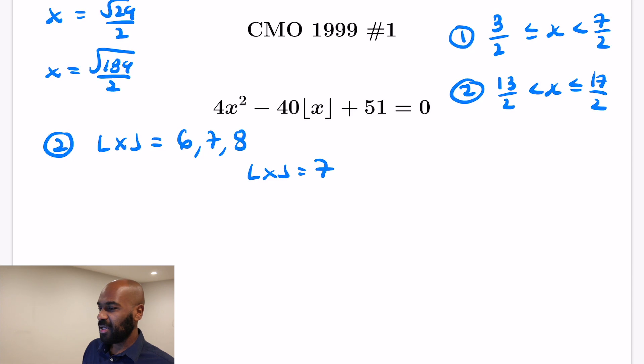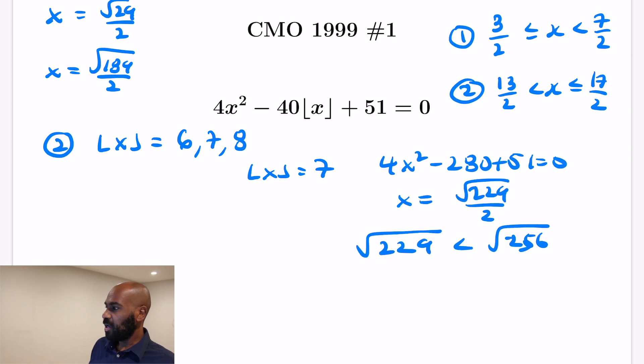Just two more values to check. First the floor of x is 7, we got 4x² - 280 + 51 = 0. Now we did the math to figure out that that's √229/2. That's upper bounded by √256/2. We don't even need a lower bound in this case. So this upper bound is going to be 8. So we know this thing is just below 8. So the floor of it has to be 7, because 256 is the next perfect square after 229.